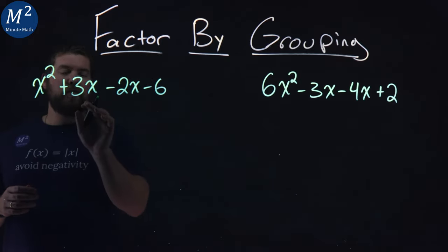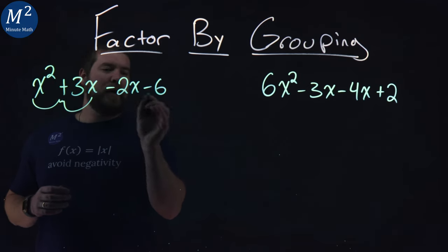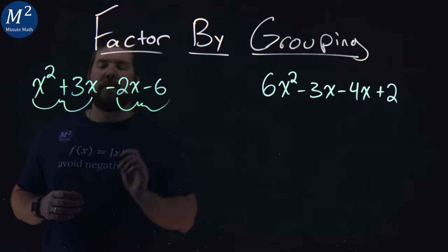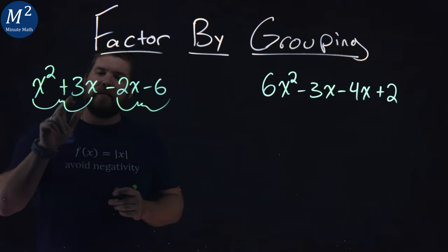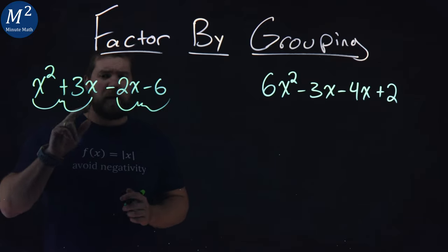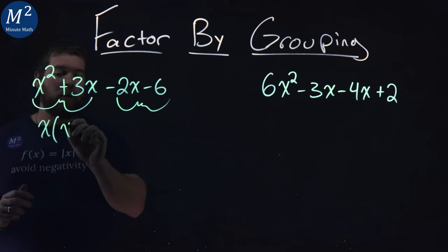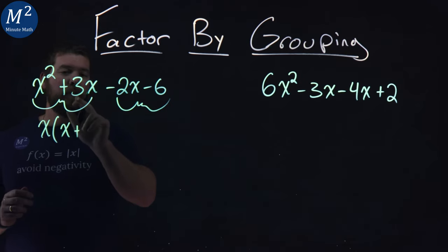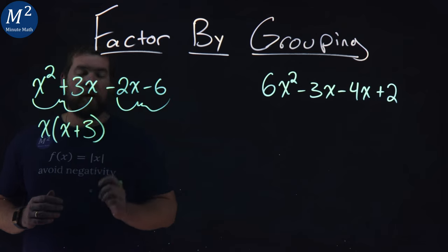The first two, x squared and 3x. And we'll have a minus 2x and minus 6. All right. The first part, x squared and 3x. I see an x is in both parts here. So if I pull out an x, I'm left with in the first part just a 1x plus an x out of 3x. I'm left with a 3 right there.